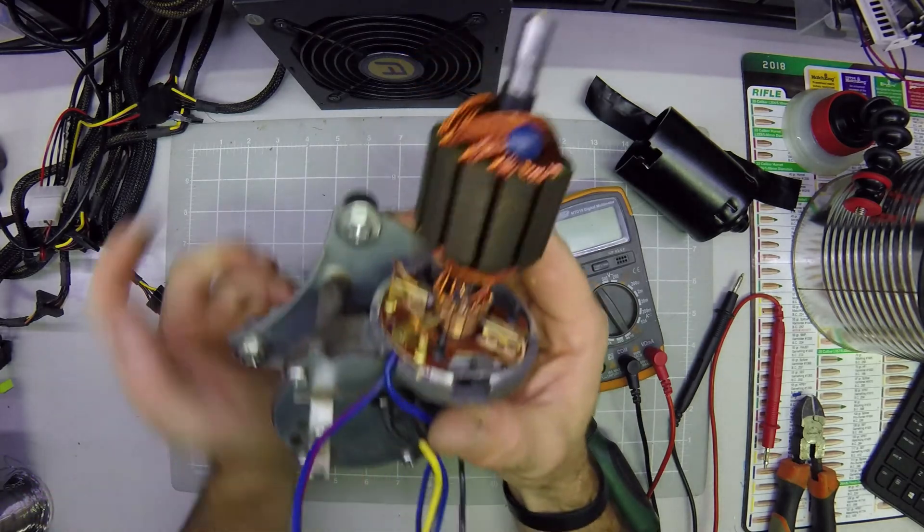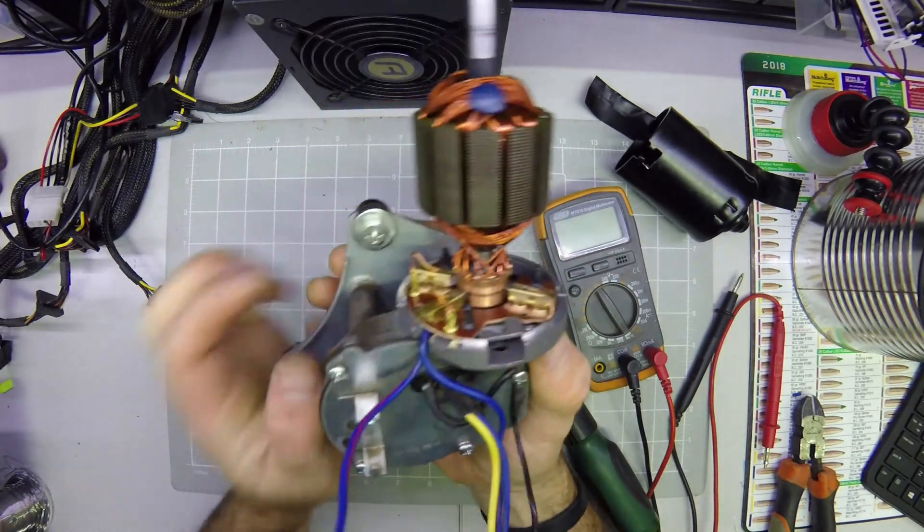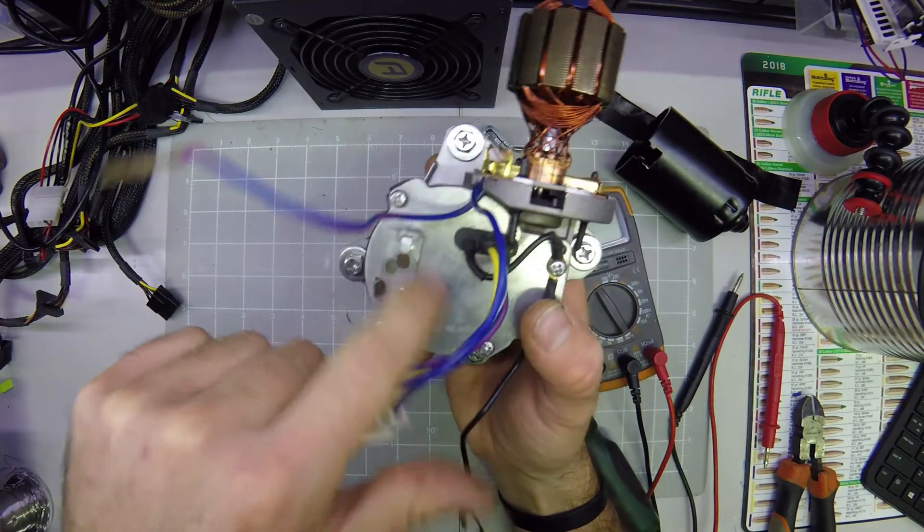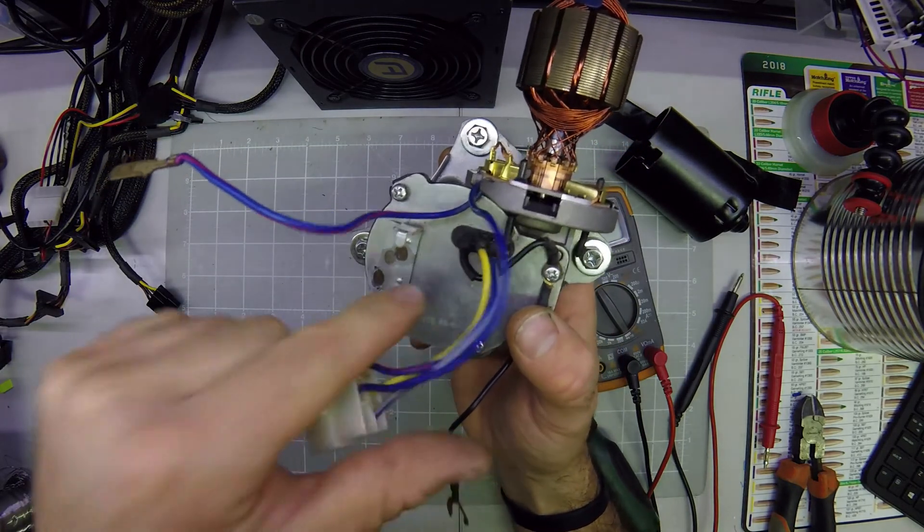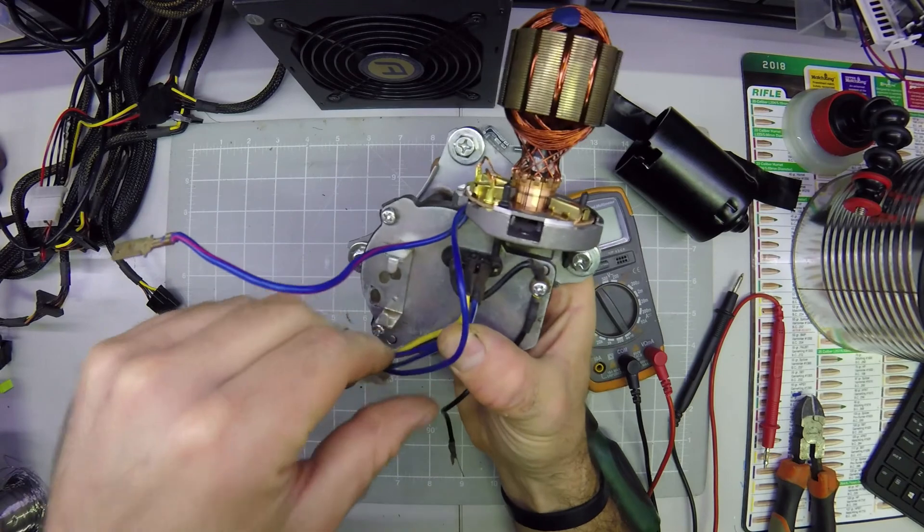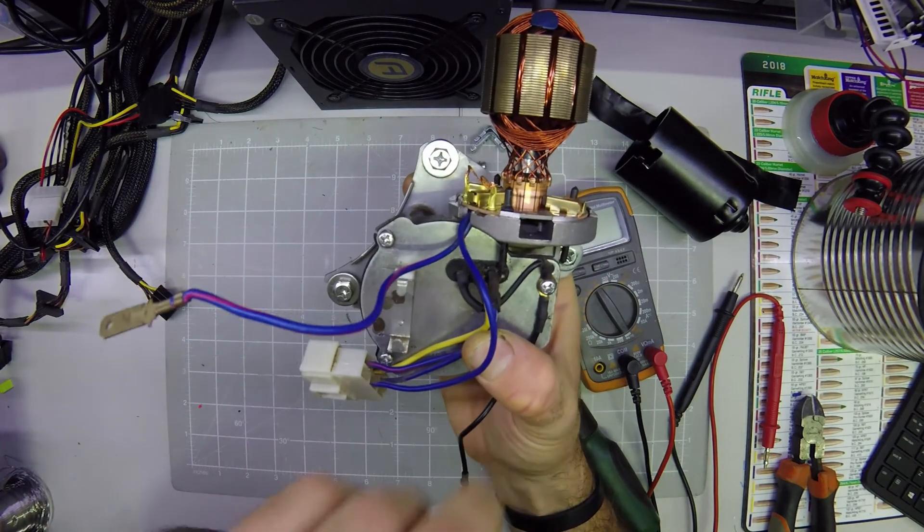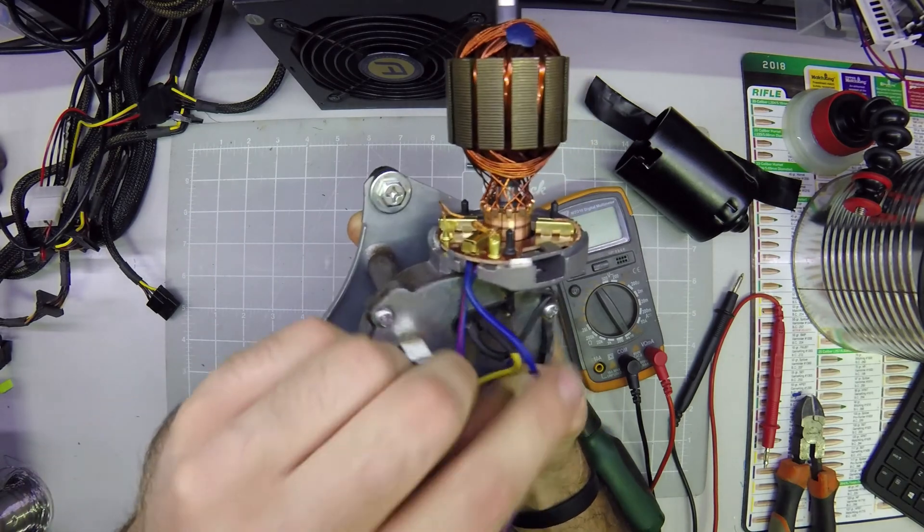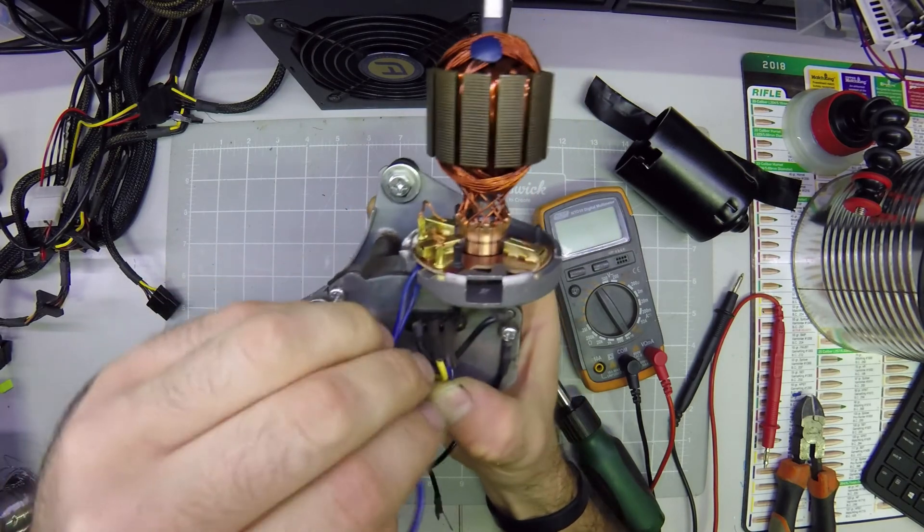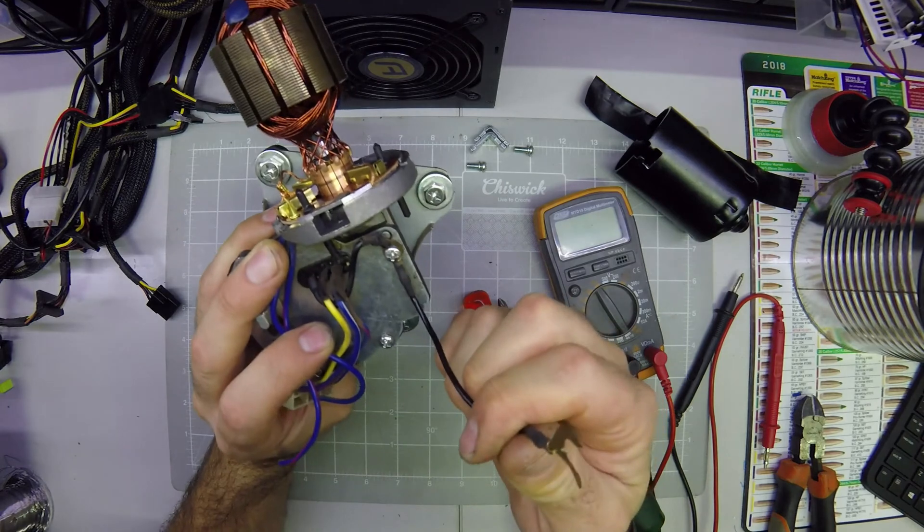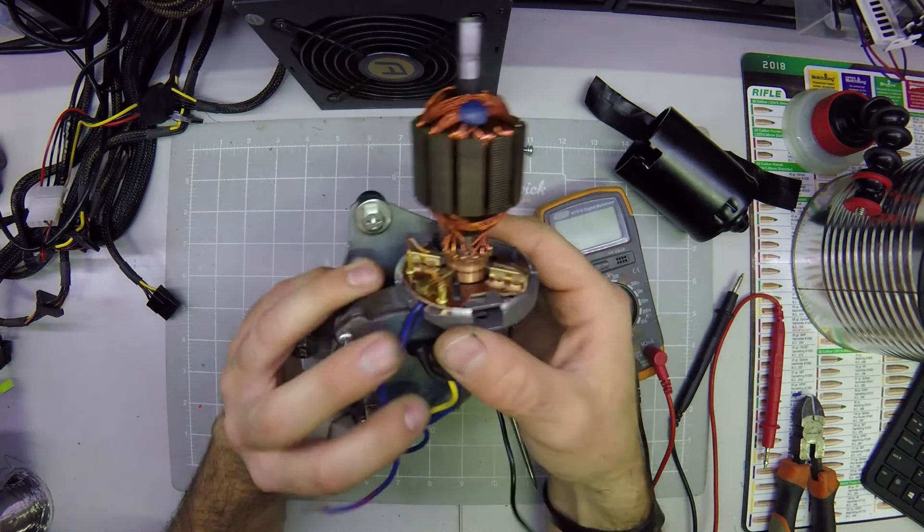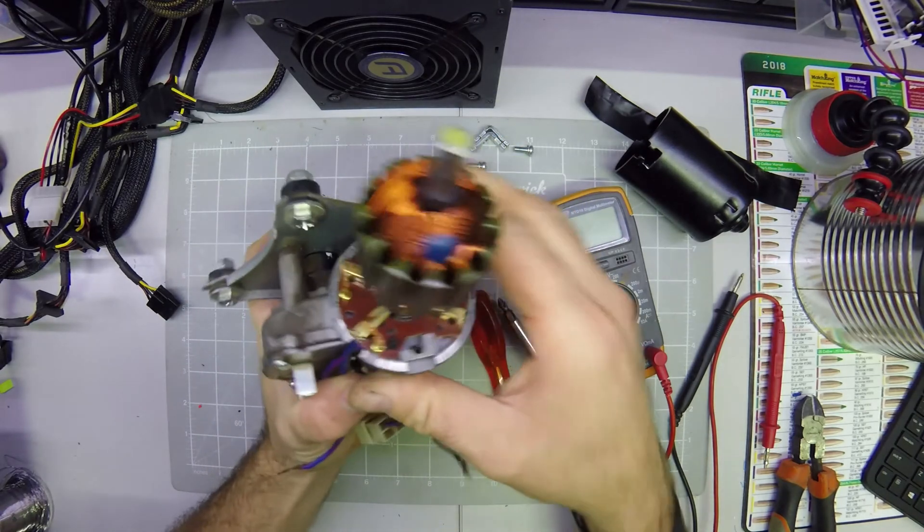So the next step is to identify which wires go where. So you'll see these three wires here just go to the worm gear section. So we're not worried about those ones. We're just focusing on the ones that go into the motor. So there's one blue one, there's another blue one, and then of course we've got the negative connected to the casing.